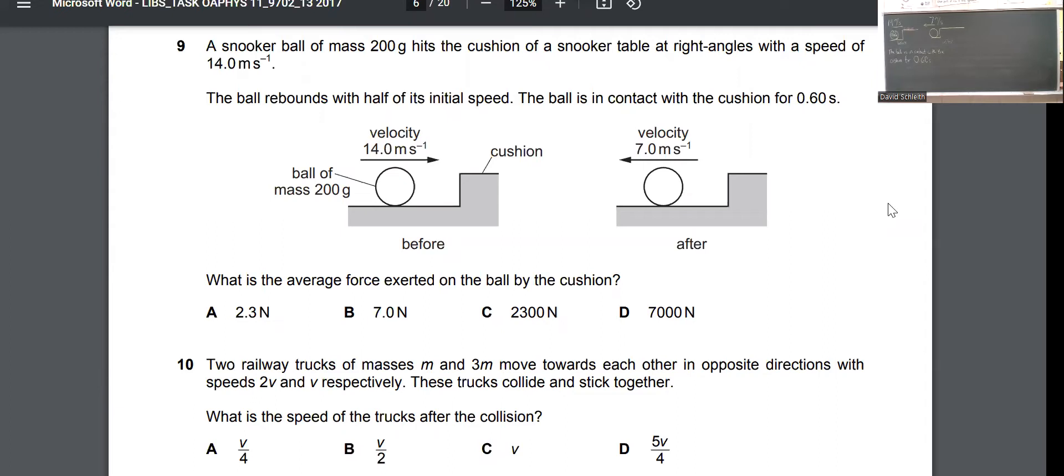This one says a snooker ball of mass 200 grams hits the cushion of a snooker table at right angles with a speed of 14 meters per second. The ball rebounds with half its initial speed. The ball is in contact with the cushion for 0.60 seconds. You can see that diagram there, but it's also diagrammed up on the chalkboard. Let's jump over the chalkboard.